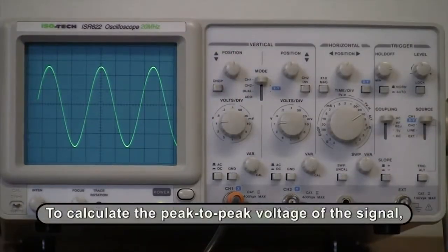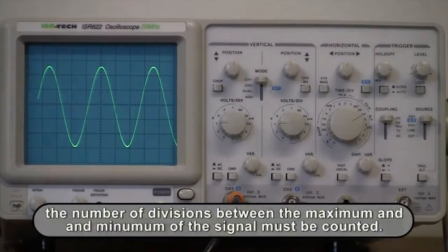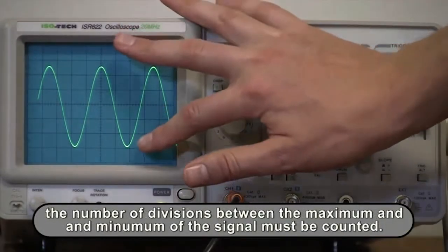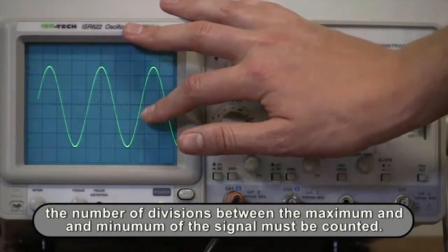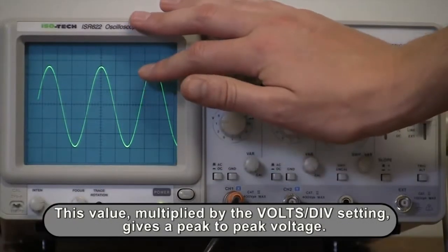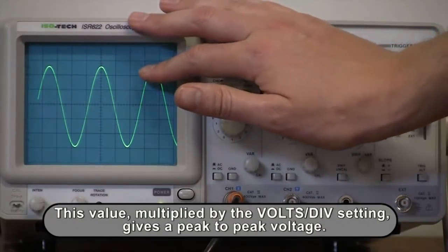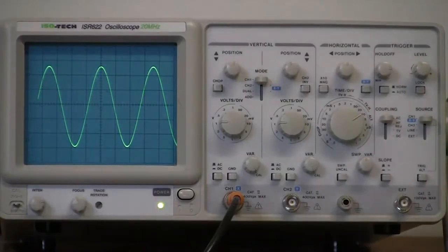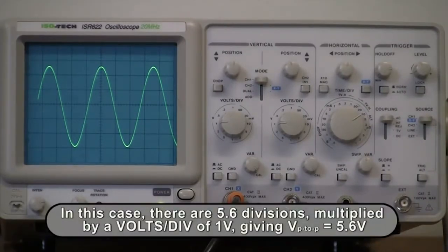To calculate the peak-to-peak voltage of the signal, the number of divisions between the maximum and minimum of the signal must be counted. This value, multiplied by the volts per division setting, gives a peak-to-peak voltage. In this case, there are 5.6 divisions, multiplied by a volts per division of 1 volt, giving a peak-to-peak voltage of 5.6 volts.